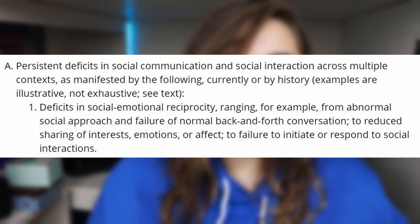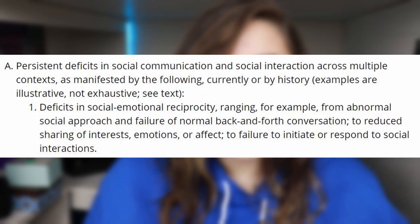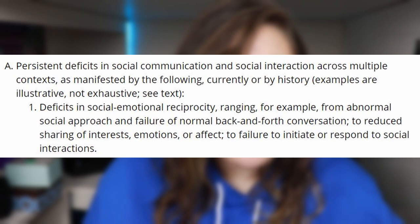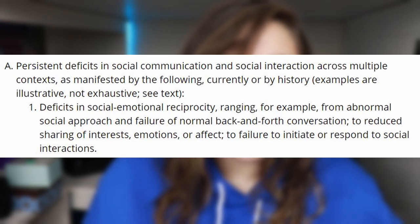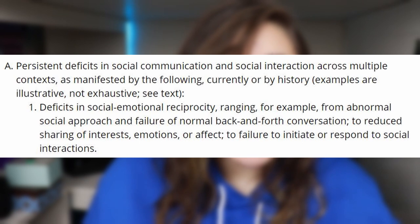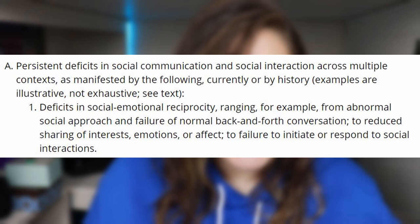Within the first category, all the criteria must be met. Persistent deficits in social communication and social interaction across multiple contexts as manifested by the following, currently or by history. Number one: deficits in social-emotional reciprocity, ranging, for example, from abnormal social approach and failure of normal back-and-forth conversation, to reduced sharing of interests, emotions, or affect, to failure to initiate or respond to social interactions.